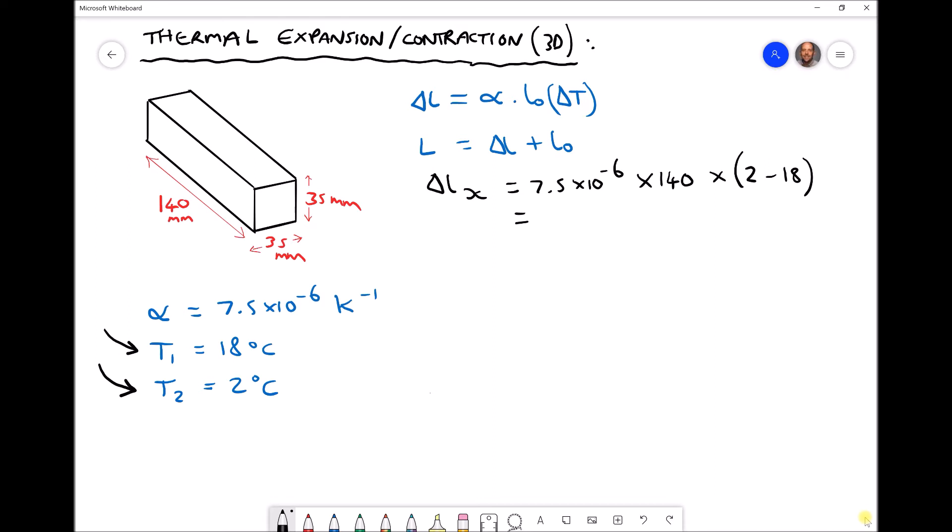That gives us a change in length in the x direction equal to minus 0.0168. We know that's in millimeters because we used our length value in millimeters.